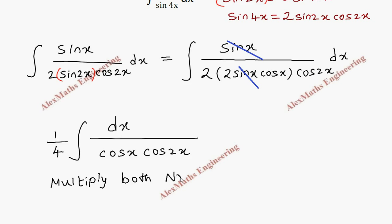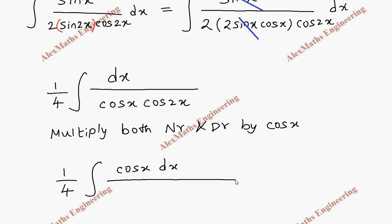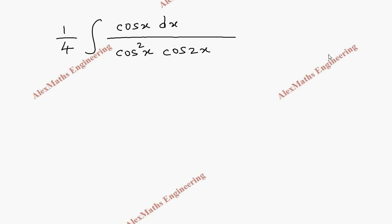Now we multiply both numerator and denominator by cos(x). This gives us (1/4) integral of cos(x) dx, divided by cos(x)·cos(x)·cos(2x). That denominator becomes cos²(x)·cos(2x).